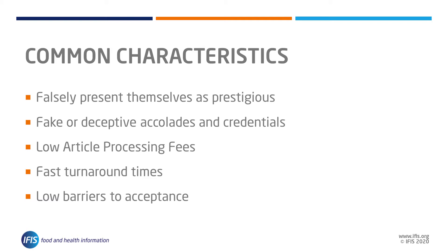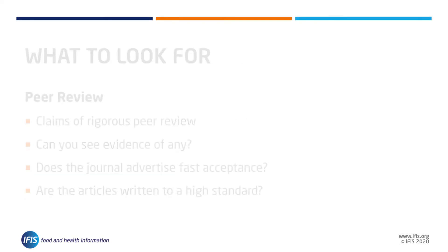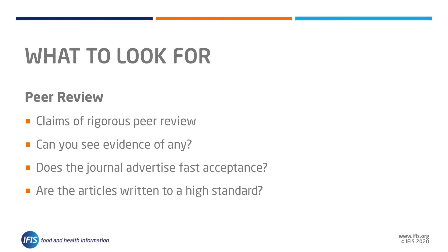As you look for a suitable journal you will most likely be dismissing predatory journals naturally, as they will not meet the standards and requirements you are looking for. However, key features to be extra vigilant of include peer review practices. Deceptive journals usually claim to provide rigorous peer review but often conduct little or none at all, and accept all submissions.